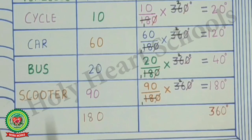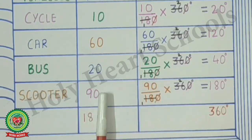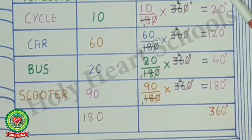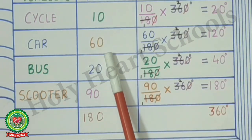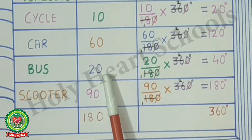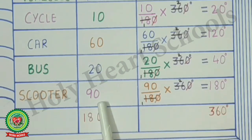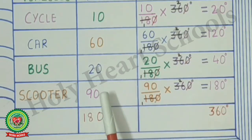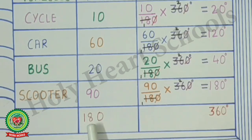Now we will make three columns. The first two columns are given in the question, and in the third column we will find the central angle using the formula. The given values are 10, 60, 20, and 90. The total value — the sum of all these values — is 180.